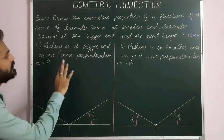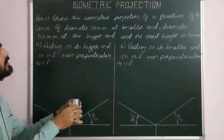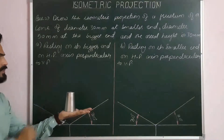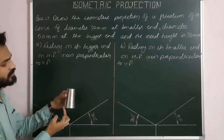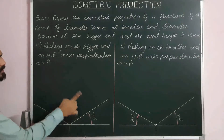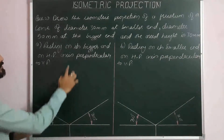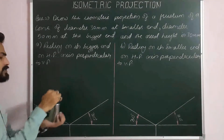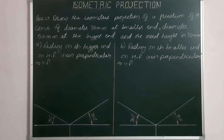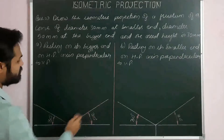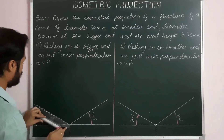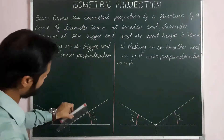For the first part using the progressive construction method: the frustum is resting on its bigger end, so the larger circle of diameter 50 mm is on HP and the cut face of diameter 30 mm is on top. First, we draw the circle of diameter 50 along the horizontal plane of isometric projection. We mark the center of the circular plane, then draw limits of 50 along the first and second iso-axes, drawing lines parallel to both axes.